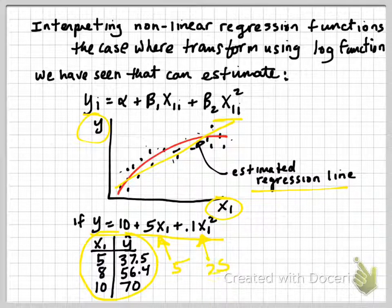We would have 10 plus 5 times 5 is 25, so that's 35. And then 0.1 times the square of 5, which is 25, so 0.1 times 25 is 0.25. So we have 35 plus 2.5, which is 37.5.